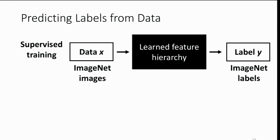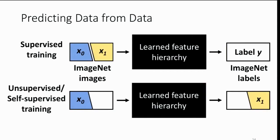For supervised training, we can train a network and learn a feature hierarchy that goes from ImageNet images to ImageNet labels, for example. Our method is an example of something that's called self-supervised or unsupervised learning. What we do is we take the input, we break it up into two pieces, and then we learn a feature hierarchy that actually is trained to regress from one piece of the input to the other.